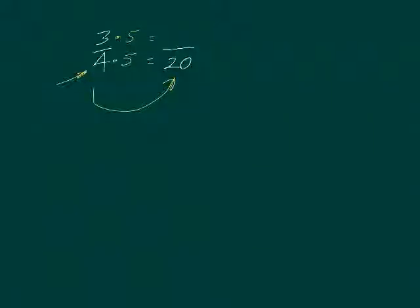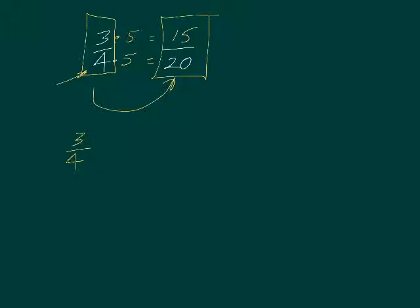So that means the top number needs to be changed so that some number over 20 when it's reduced will equal 3 over 4. And there's a pretty simple way of doing that. You look and see that the bottom number here is a 4 that we started with and we want to turn it into a 20. So how did we go from a 4 to a 20? What did we have to multiply 4 by in order to get 20?